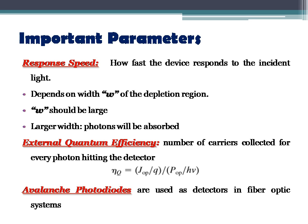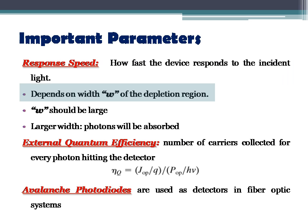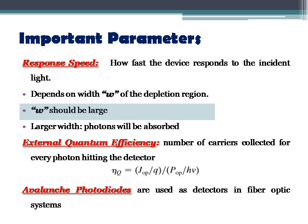The first parameter is response speed — how fast the photo detector device responds to incident light. Response speed is the measure of how fast the photo detector responds to incident light, and it depends on a parameter called the width of the depletion region.